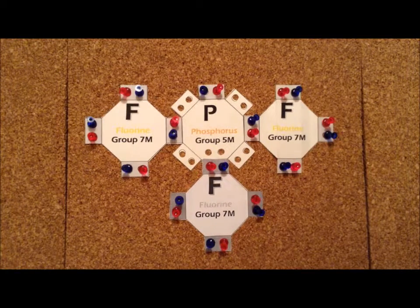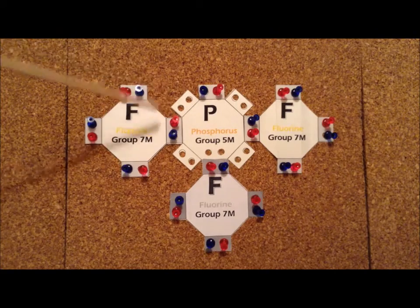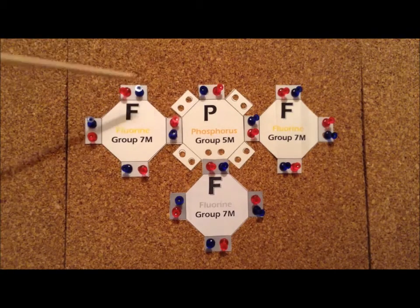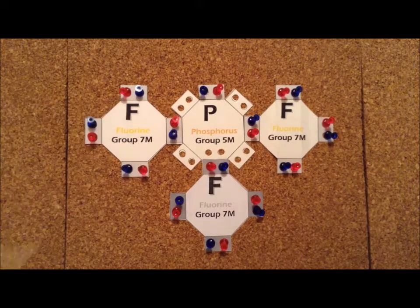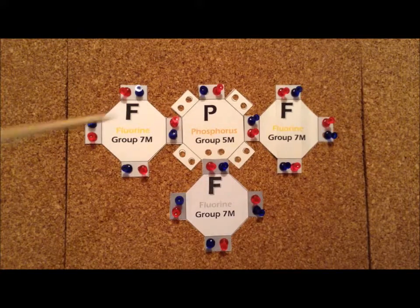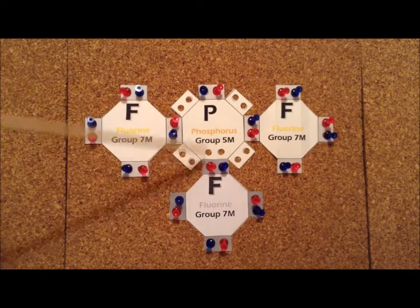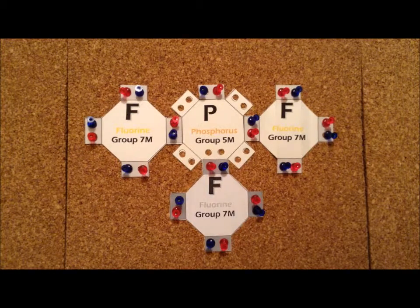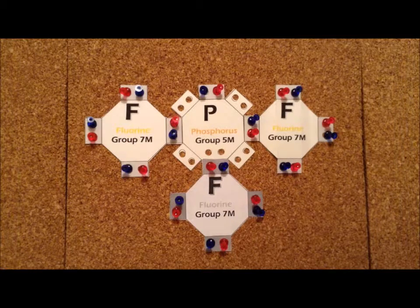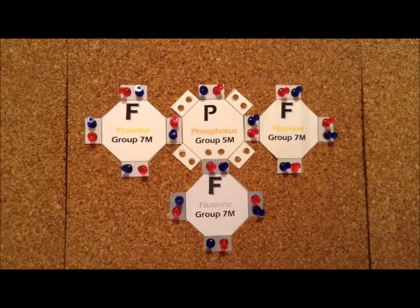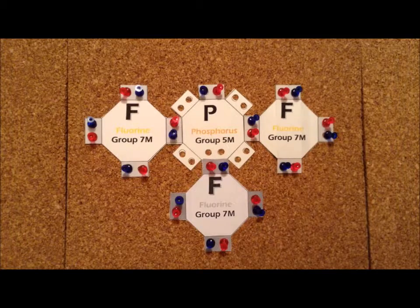Now, we notice here that phosphorus, being in the third row, can expand its octet. There's these open white boxes that have holes in it, and we also have the gray area. So, we filled up all the grays, which shows that we've satisfied the octet rule, but since we have not put any electrons into the white regions, that tells us that we have not expanded the octet for this particular compound.